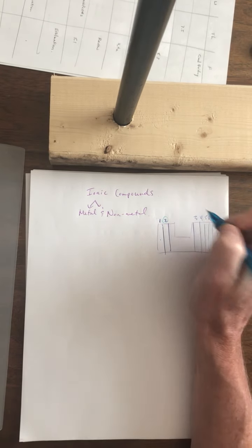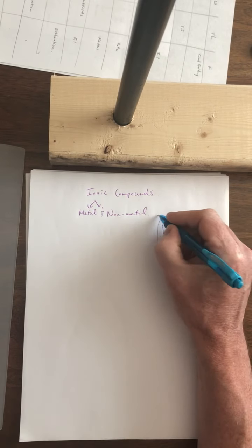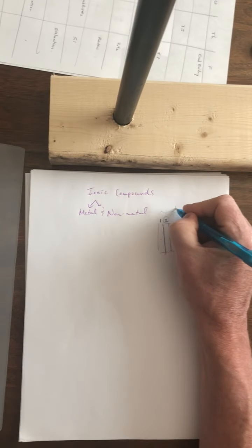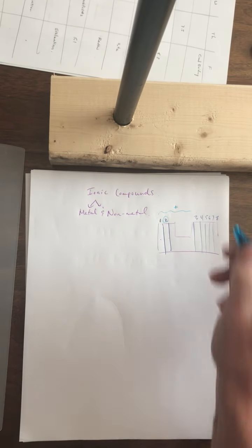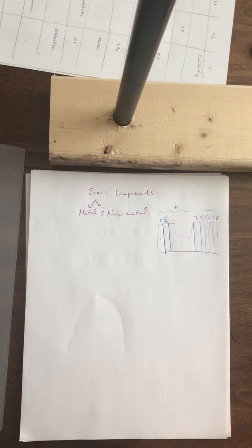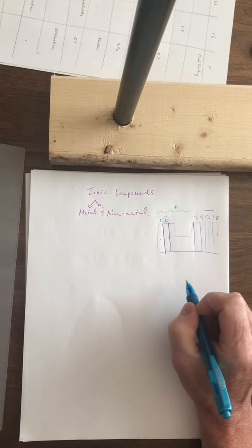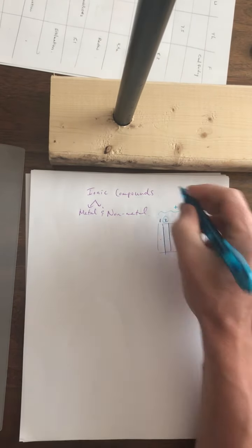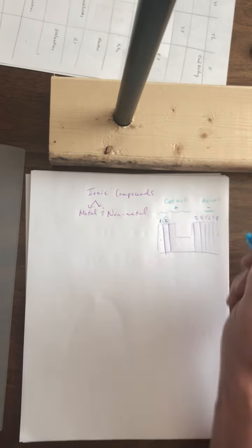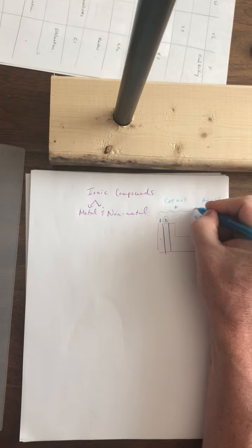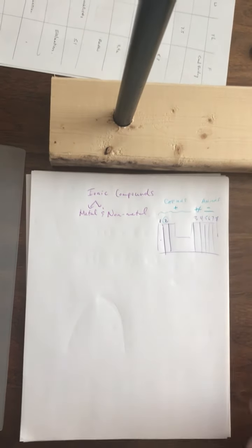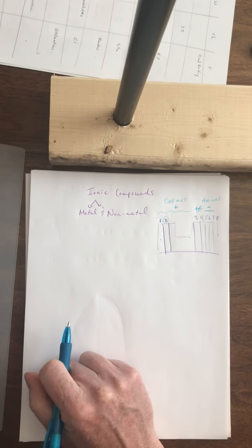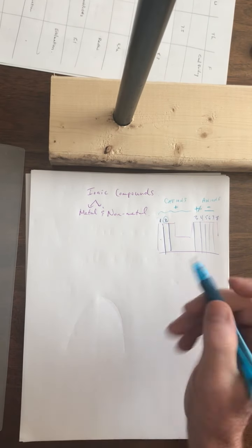When elements have one, two, or three outer electrons, it's easier to lose them — so they become positively charged cations. For elements with five, six, or seven outer electrons, it's easier to gain one, two, or three more electrons, giving them a negative charge — those are anions. Family four is right in the middle and can either lose or gain electrons. Noble gases have a full outer orbit and don't react.